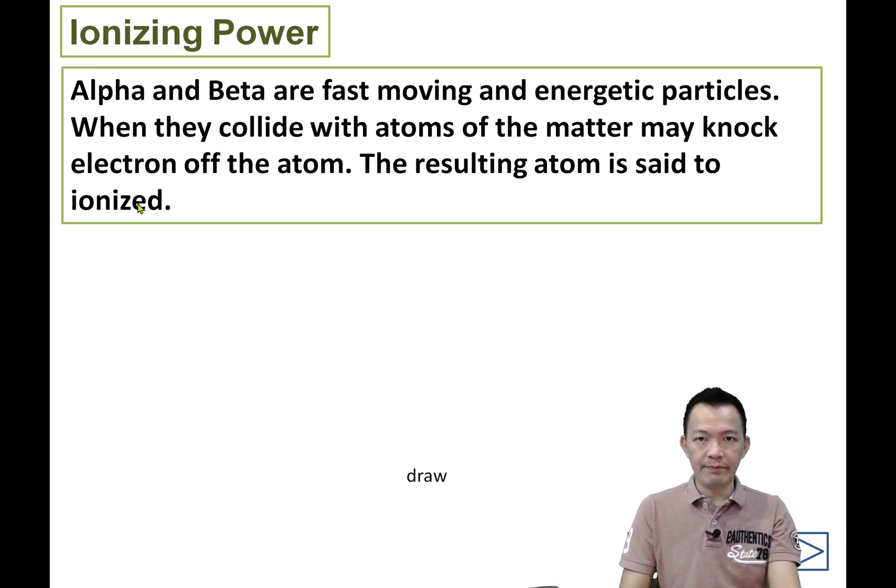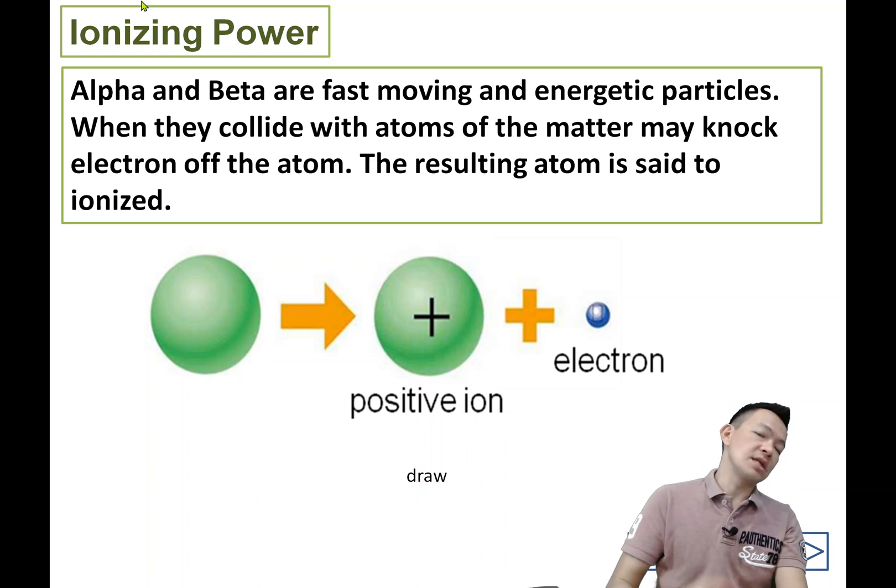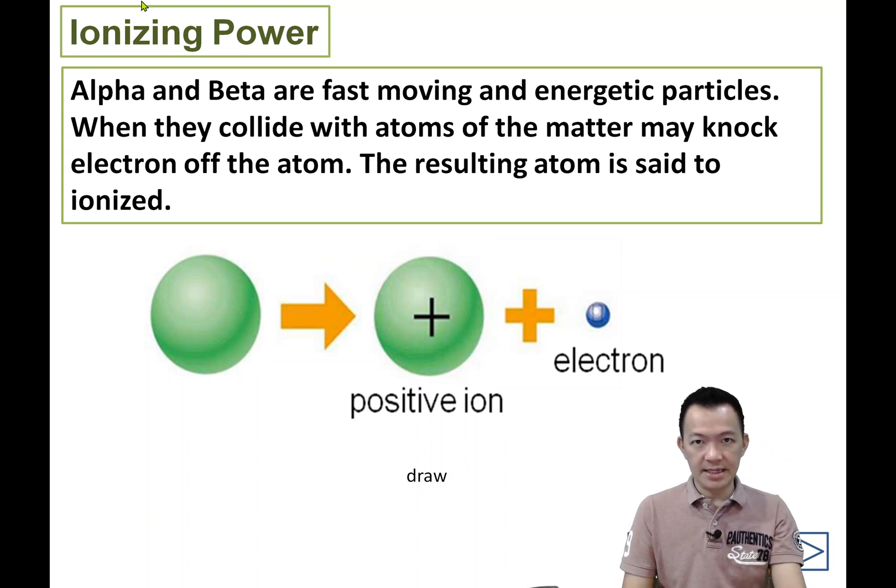Look at the example. This is an atom. When an alpha particle, my mouse cursor represents it, collides with the atom, it knocks off the electron. When the atom loses the electron, it becomes positively charged. This is what we call a positive ion.